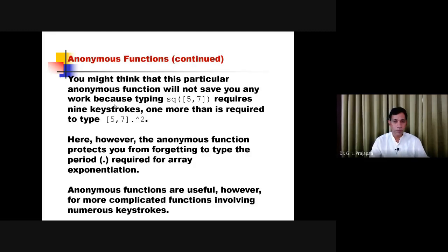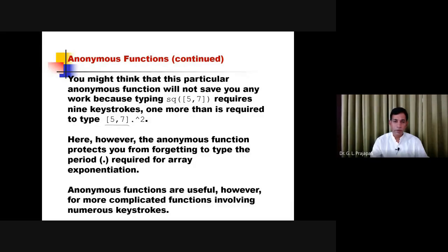This description illustrates that if you want to compute the square of 5 and 7 without an anonymous function, you would need to write: [5, 7].^2. If you have not created the anonymous function, you type that expression each time, requiring more keystrokes.